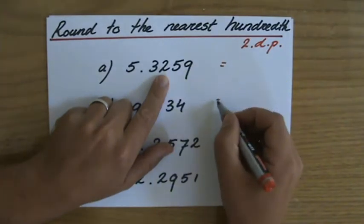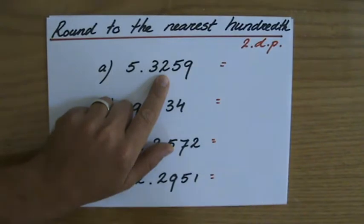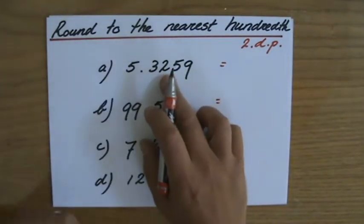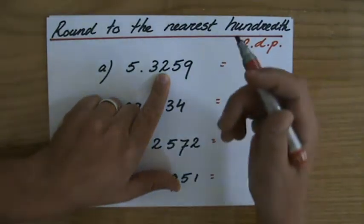It really follows the same path as rounding with all numbers or rounding with one decimal place. It's all the same. Picture that number line. Is it nearer to 5.32 or is it nearer to 5.33?